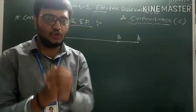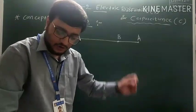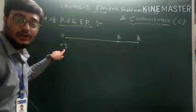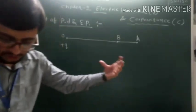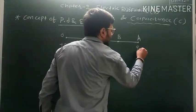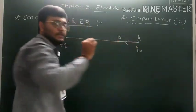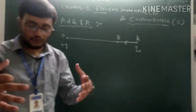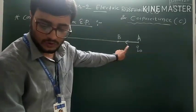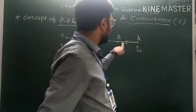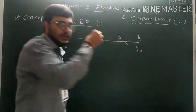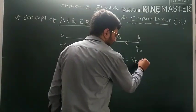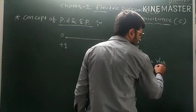We take another charge Q₀, the test charge. Test charge Q₀ is moved from A to B, against the electric field produced by the plus Q charge. When a test charge Q₀ moves from A to B against the electric field of plus Q, there is a repulsive force exerted by charge plus Q. When we calculate the potential difference between points A and B, it is given by the equation: VB minus VA equals W_AB divided by Q.